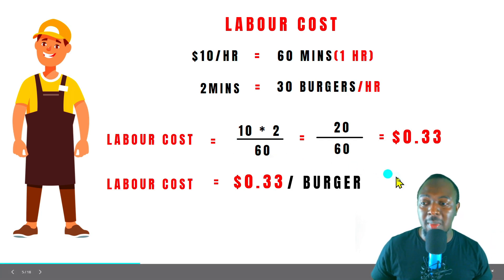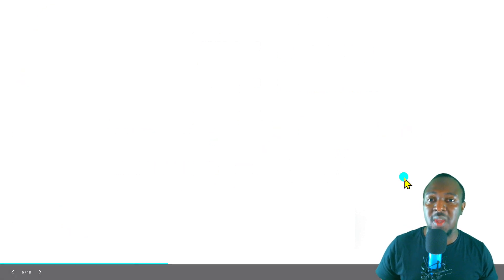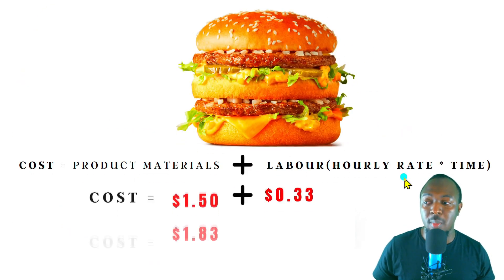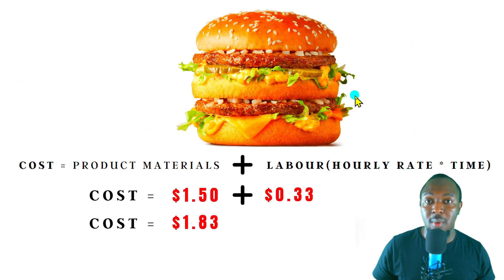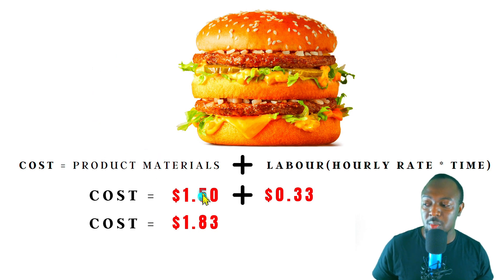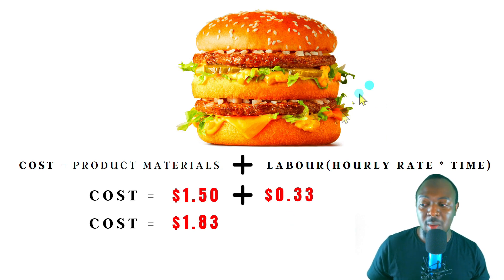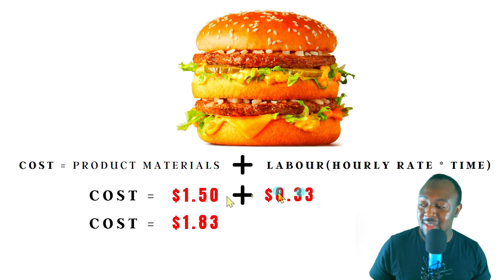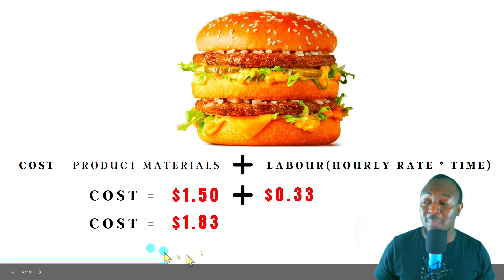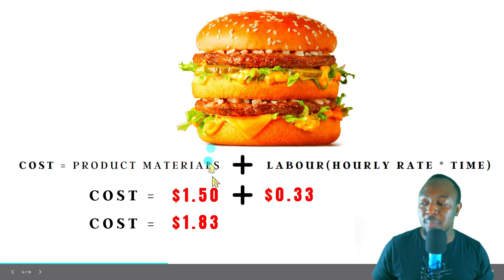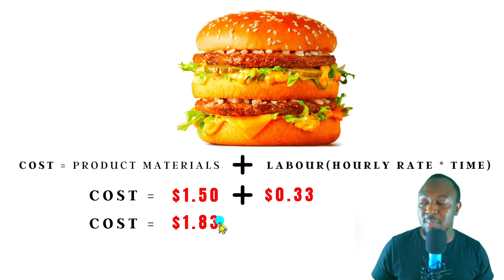So now we've got our material costs and our labor costs. The total cost for each burger: the product material was $1.50 and the labor was 33 cents. So together, to produce one burger is costing McDonald's $1.83.